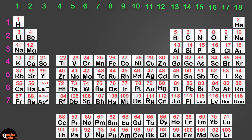Group 1 has the number IA - 1 is written in Roman numeral and the alphabet capital A. Group 2 is IIA. When we go to group 3, it's IIIB. Then you have IVB, VB, VIB, VIIB.